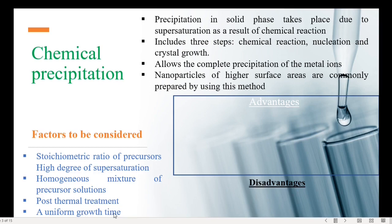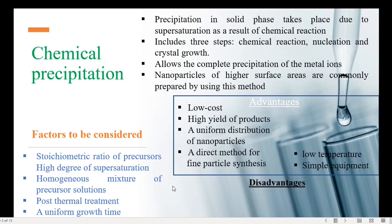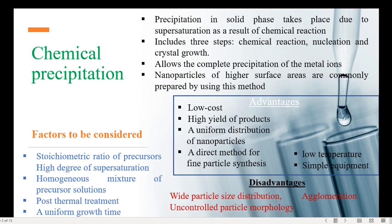The different advantages of chemical precipitation methods are as follows: low cost, high yield of products, uniform distribution of nanoparticles, an appropriate method for fine particle synthesis, low preparation temperature, and simple equipment setup. This method has few disadvantages too: wide particle size distribution, agglomeration, and uncontrolled particle morphology.